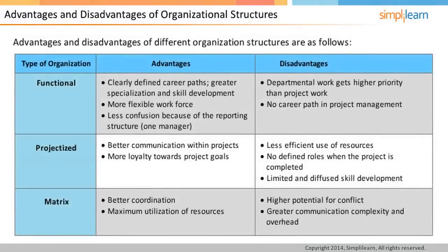Each organization structure has its own set of advantages and disadvantages. The advantage of functional organizations is that resources may find clearly defined career paths and achieve specialization and skill development in their respective fields. It will be a flexible workforce since only one manager will be responsible, avoiding confusion. The disadvantage is that project work is hampered — department work is always given higher priority than project work.